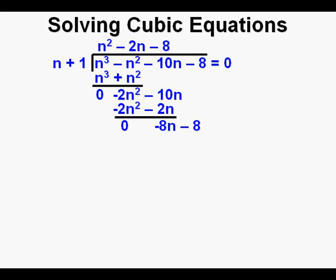We bring down the -8 from above and place it here. Now divide -8n by n and place the result -8 on top. Now multiply -8 by n to get -8n and place it below -8n here. Next multiply the -8 by the 1 to get -8 and place it below the -8 here. Then we subtract -8n from -8n and also -8 minus -8 which is zero for both calculations. So we've successfully factored out quantity n + 1 and have the trinomial n² - 2n - 8 left to work with.